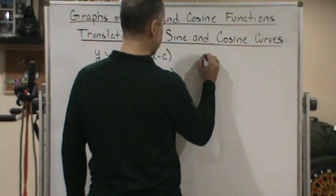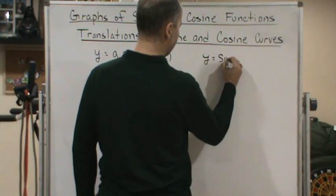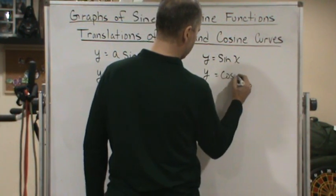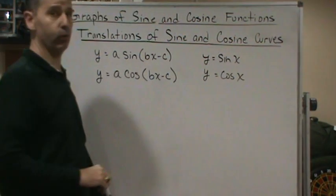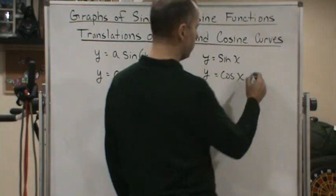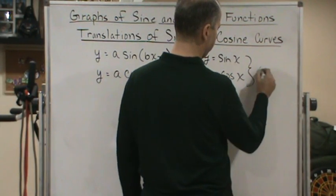Let's look at y equals sine x and y equals cosine x. We know that these two functions have a period that goes from zero to two pi.